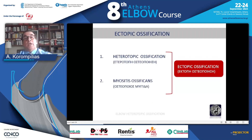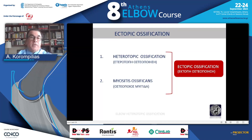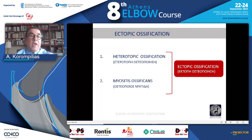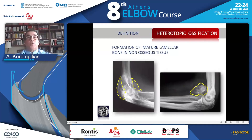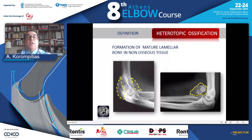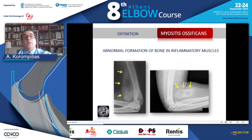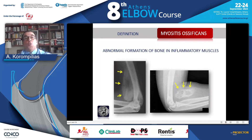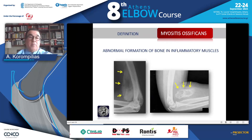When we talk about heterotopic ossification, we're using it as part of a general term like ectopic ossification, which includes myositis ossificans. Heterotopic ossification is the formation of lamellar bone in non-osseous tissue, while myositis ossificans refers to abnormal bone formation in areas of damaged or inflammatory muscle.